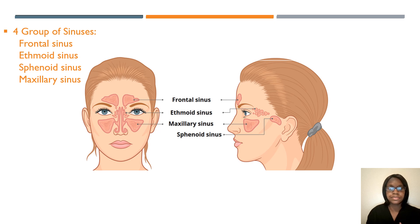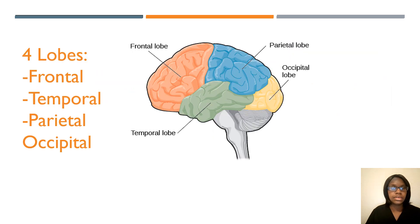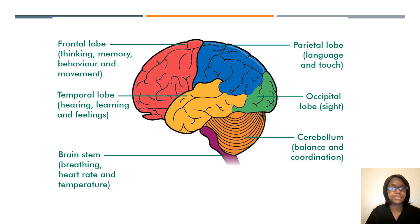Make sure that you know your membranes of the brain. There are three — know which layer is the strongest, which is the inner layer, and which one contains the CSF fluid. You have four lobes — make sure you know frontal, temporal, parietal, and occipital, and know where to find those on a CT head image. This additional information explains the functions of each lobe, so make sure that you know this.